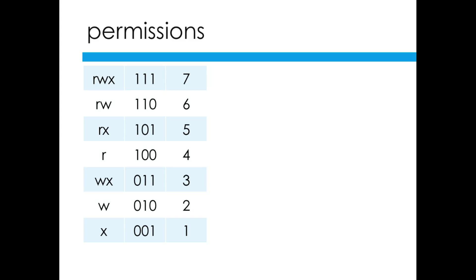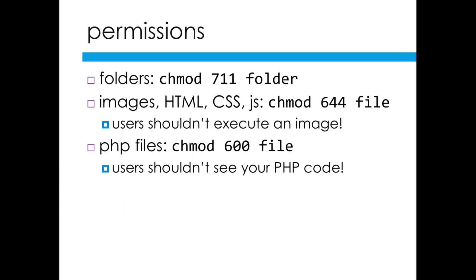With permissions, when we use the letters, we can also use numbers instead. When you want something to be executable, that's represented by the number 1. Something readable is the number 4, and writable is number 2. When you want a combination of those, then you add them. If you want something to be readable, writable, and executable, then you would add 4, 2, and 1, and that gives you 7. Whenever you have a folder, you want it to be executable by everyone as well as readable and writable, so you make that 7.